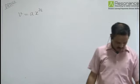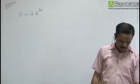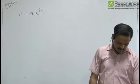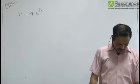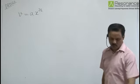This is the velocity as a function of displacement. We need to find the total work done by all forces during a displacement from X equals 0 to D.